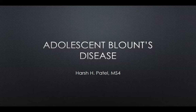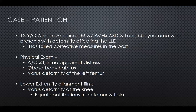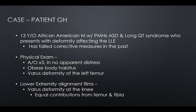Good morning everyone. My name is Harsh and today I'll talk about adolescent Blount disease. The case: a 13-year-old African-American male with a past medical history of autism spectrum disorder and long QT presented with a deformity of his left lower extremity. He had tried corrective measures that failed and came in looking for a more definitive fix. On physical exam, the important findings were obese body habitus and an apparent varus deformity of the left lower extremity.